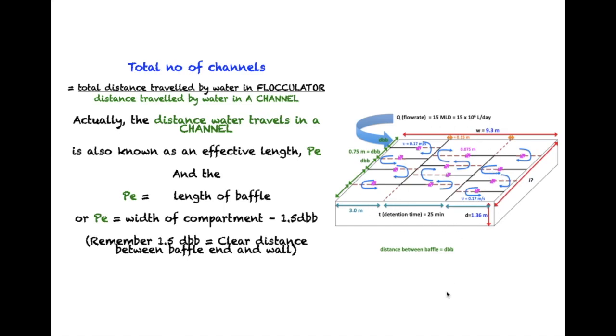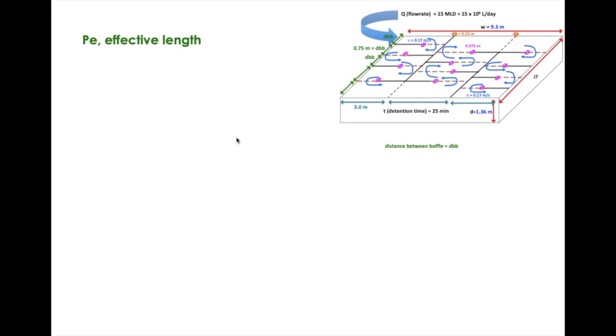Right, the PE or the effective length is the width of the compartment which is 3 meters minus 1.5 dBb. So 3 meters minus 1.5 distance between baffles, which is 0.75 meters, gives us 1.875 meters. So that is the effective length.